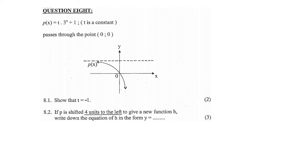In this question we are given an exponential graph and they've given us the form over there. They say show that t is equal to negative 1. So let me write this out: p(x) equals t multiplied by 3 to the power of x plus 1.